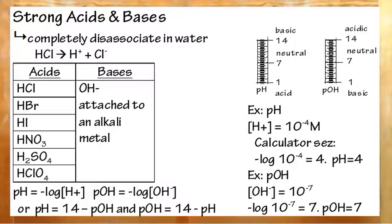To recap, strong acids and bases completely dissociate in water. That means they'll break up completely into their ions. The strong acids are these ones, and the bases are just OH- attached to an alkali metal. The pH scale goes from 1 to 14. 1 being most acidic, 7 being neutral, and 14 being most basic.